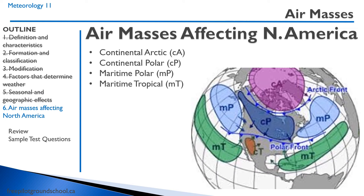There are four air masses in North America that predominantly affect our weather. We have a continental Arctic air mass over the North Pole that pushes down — sometimes the really cold weather in Winnipeg comes from the continental Arctic air mass blowing down. We also have a continental polar air mass over most of Canada and maritime polar over the coasts. Sometimes maritime tropical air masses from the Caribbean force their way up, bringing heavy rains because they are so moist, pushing up into Ontario over coastal regions.